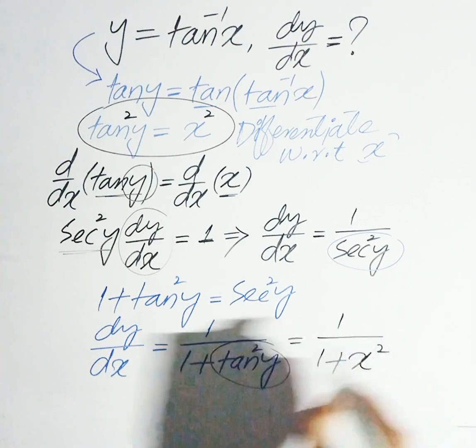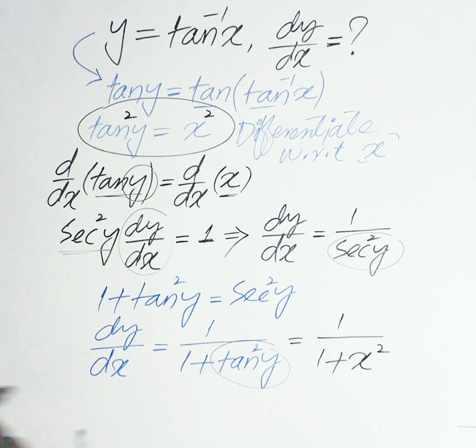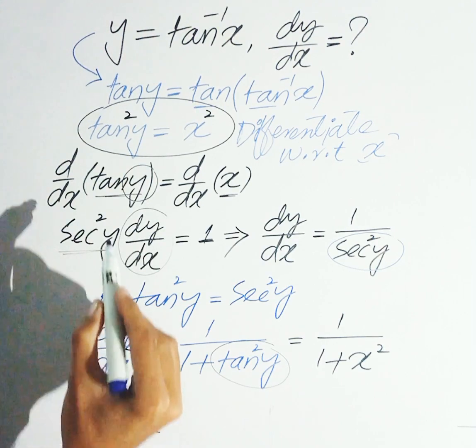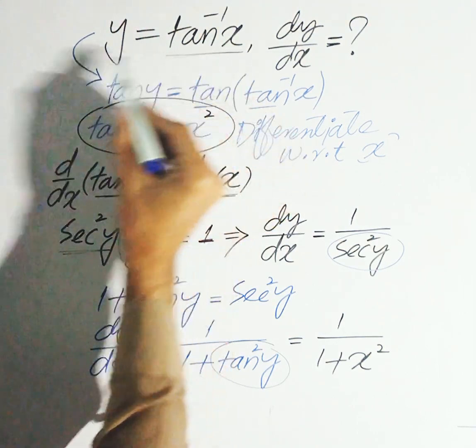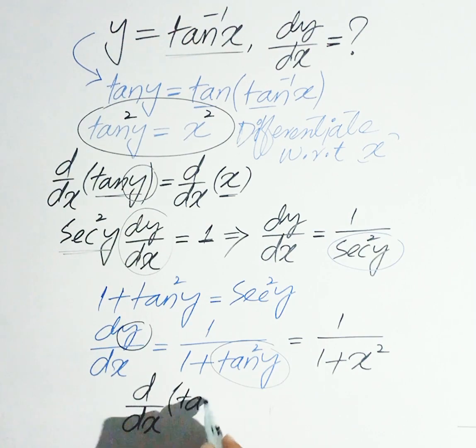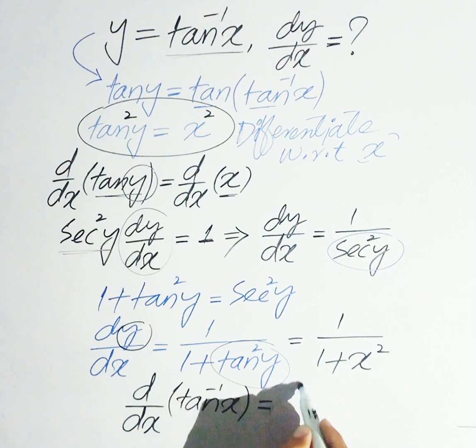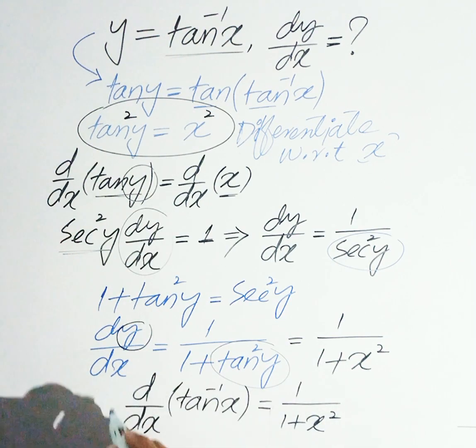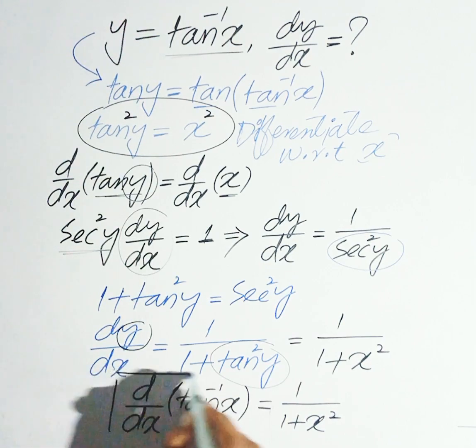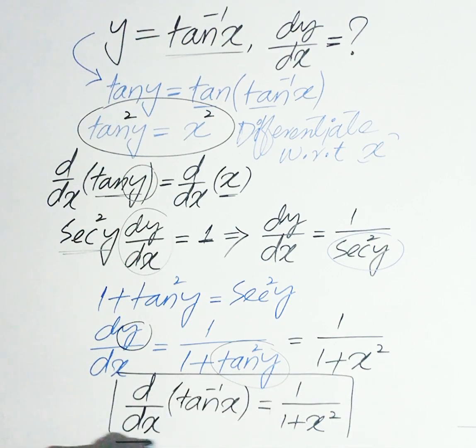We get 1 divided by 1 plus x squared. So finally, the derivative d/dx of tangent inverse of x is equal to 1 divided by 1 plus x squared. This is the derivative of tangent inverse of x.